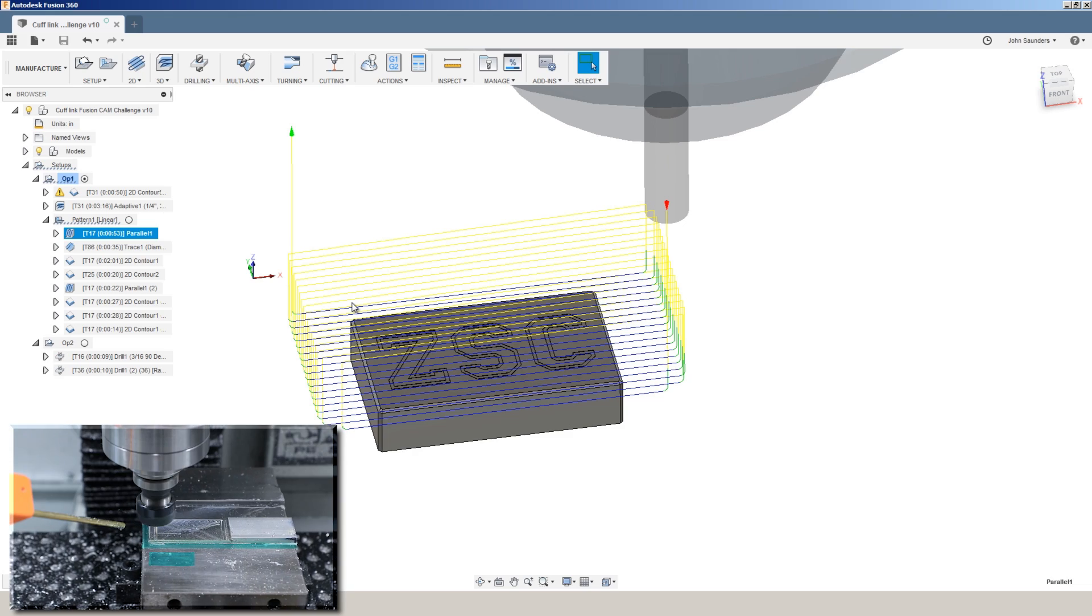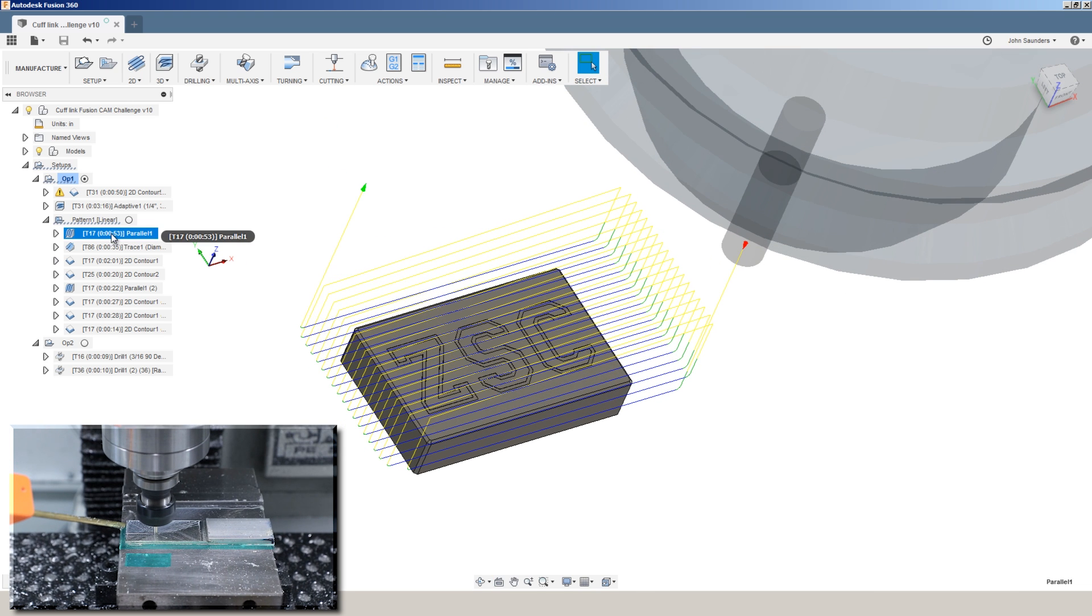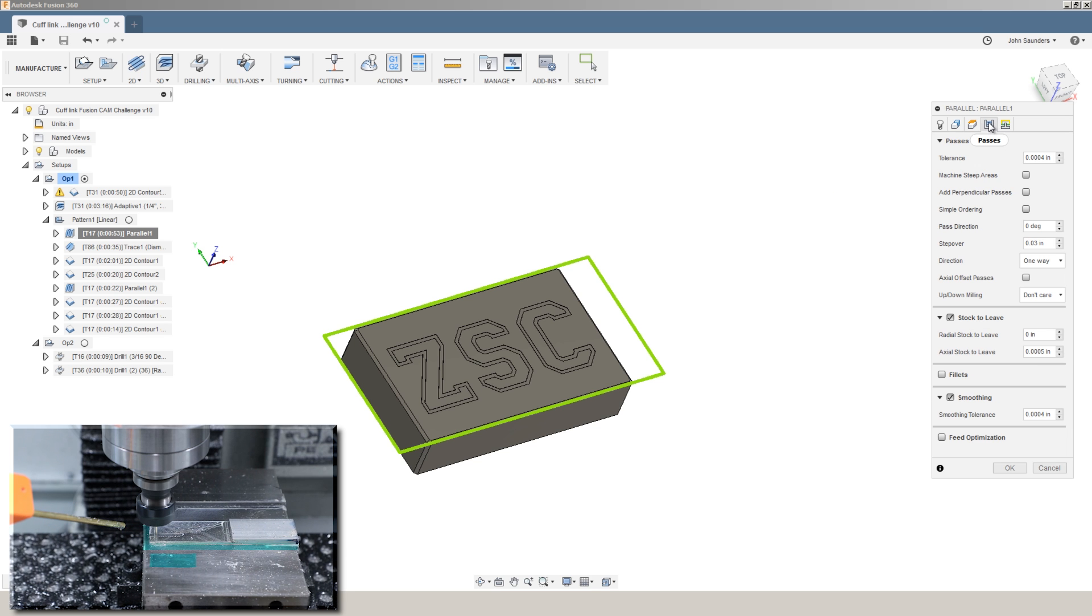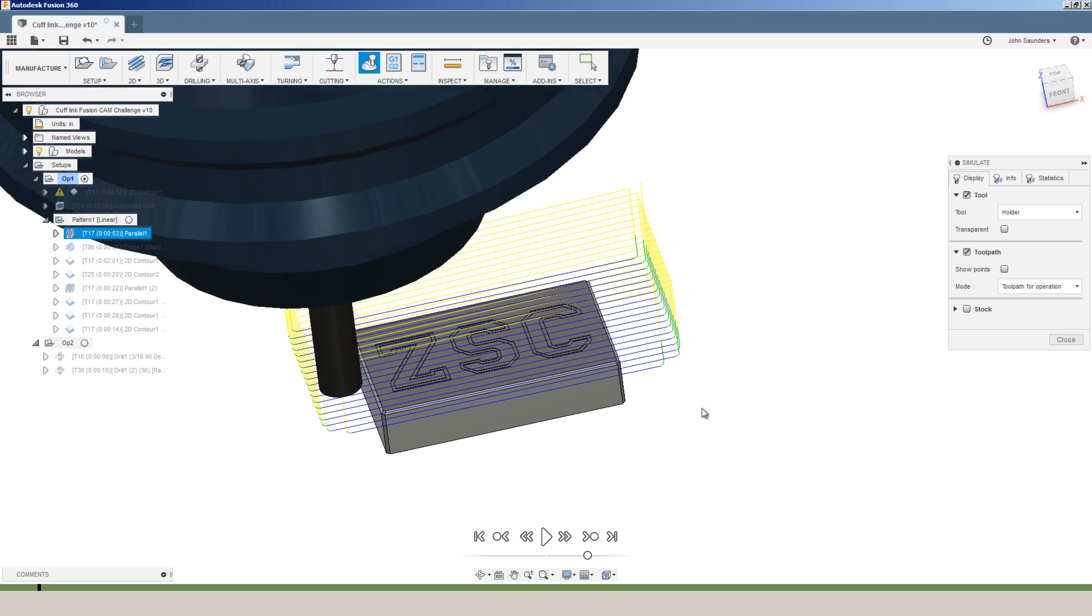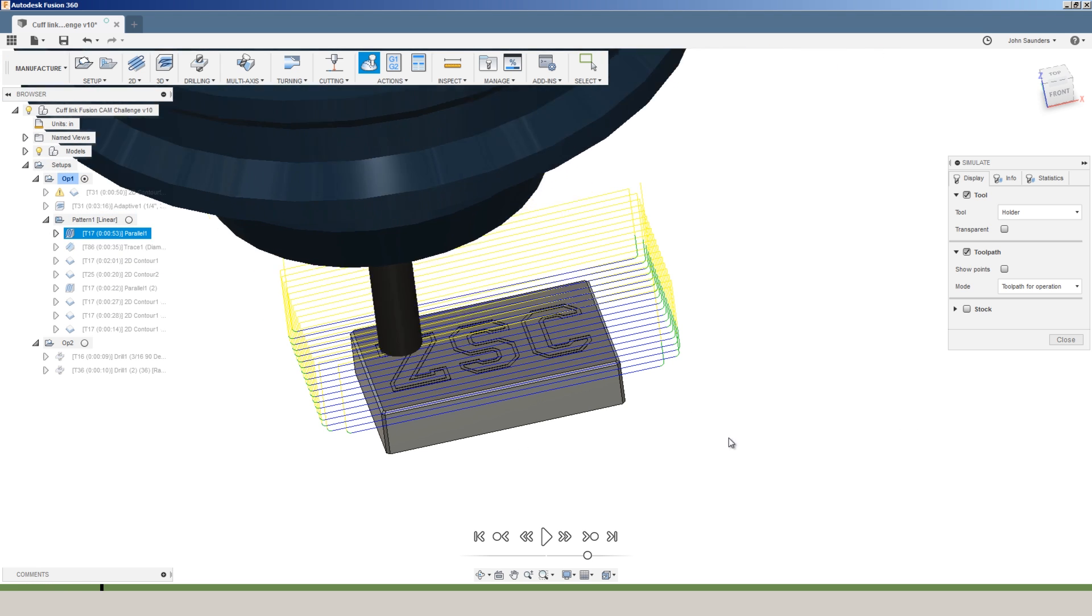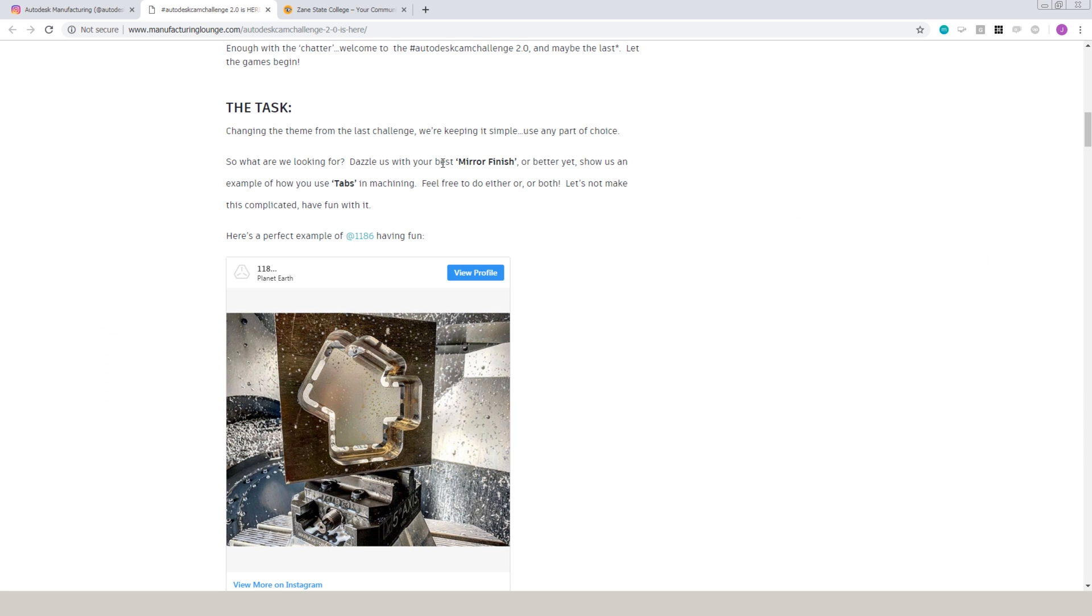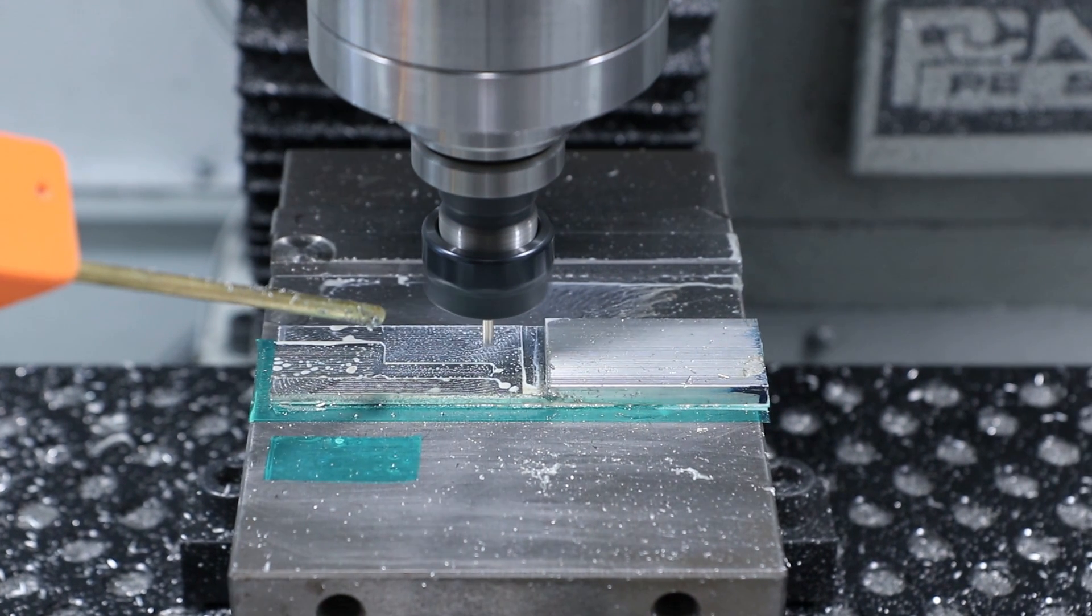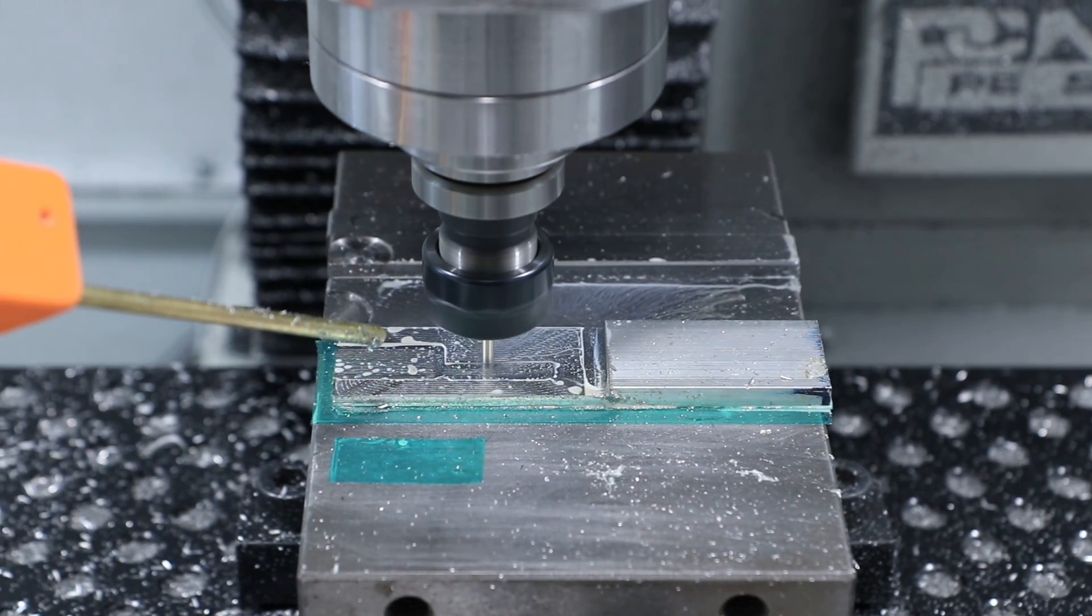And now when we come back and we do our adaptive, we already have that area slotted out, and we are not going to have that slotting effect that's going to cause chip welding and break our tool. The next thing we're doing is something a little bit unusual. We're using a parallel tool path with a 1 1⁄8 inch end mill with relatively small stepovers. We're using the patch environment to create a larger surface to drive that parallel tool path off the left and the right side of the part.